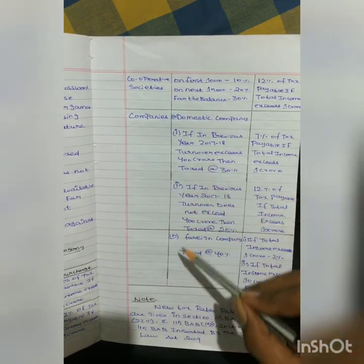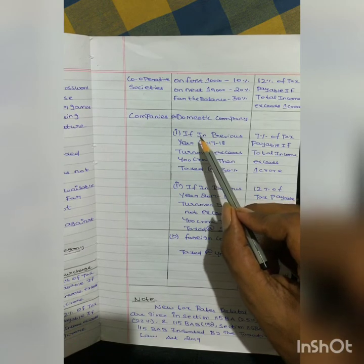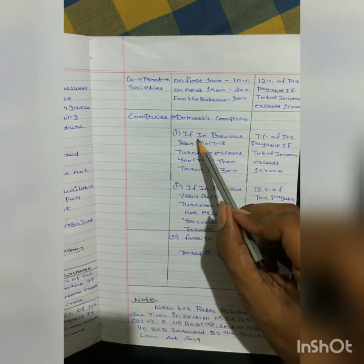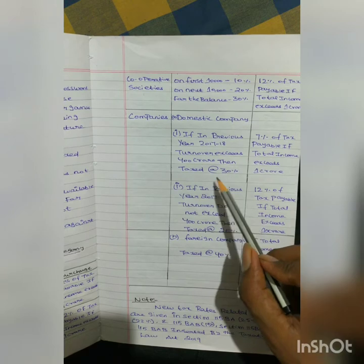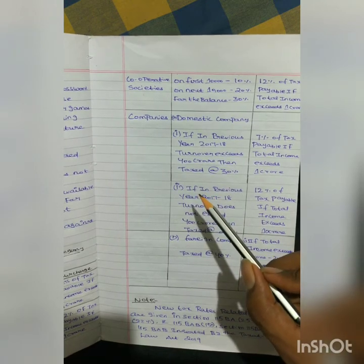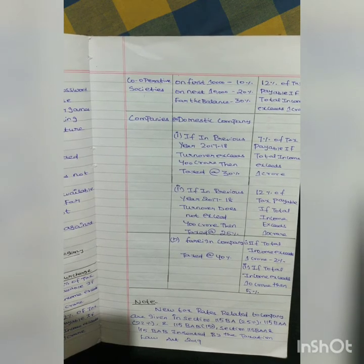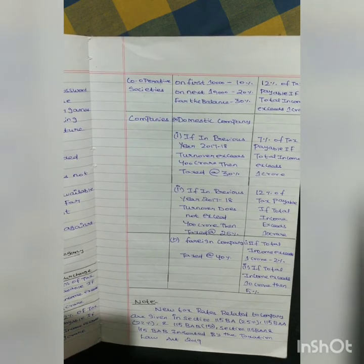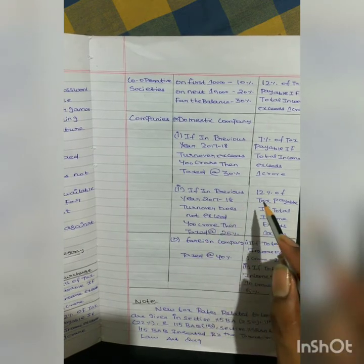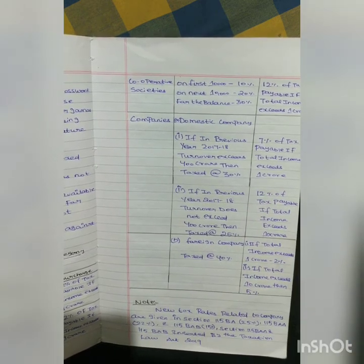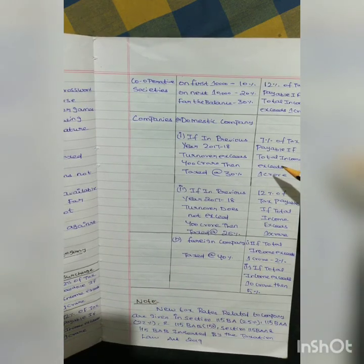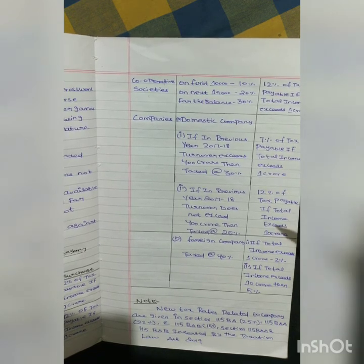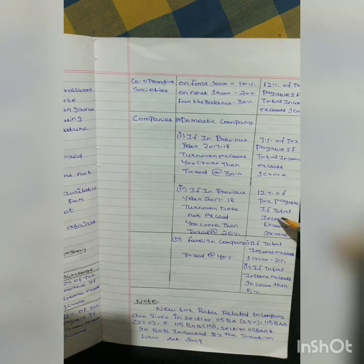For domestic companies: if the domestic company's turnover exceeds 400 crore in financial year 2017–18, the tax rate is 30 percent. If the turnover does not exceed 400 crore, the tax rate is 25 percent. Surcharge is 10 percent if total income exceeds 1 crore, and 12 percent if total income exceeds 10 crore.